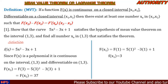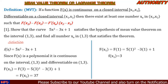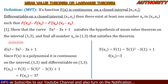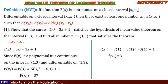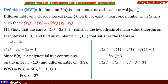We have found the values for f(x1) and f(x2). Now our theorem states that f(x2) minus f(x1) equals f prime of x0 times x2 minus x1. So f(x2) minus f(x1) = 37 − 3 = 34. And x2 minus x1 = 3 − 1 = 2.